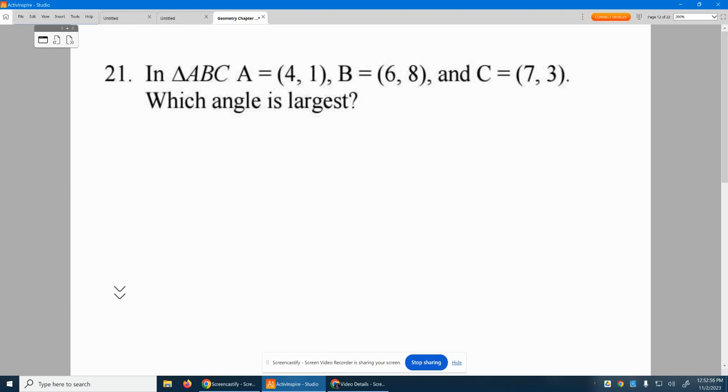Number 21, it says in triangle ABC, A is located here, B, and C. Which angle is largest? Well, the angle that is largest is going to be determined by which side is the longest. The side that's across from the angle, if I can find the longest side, the angle across from it is going to be the largest angle.